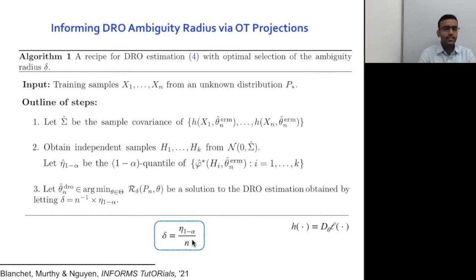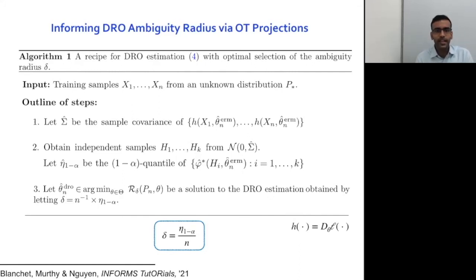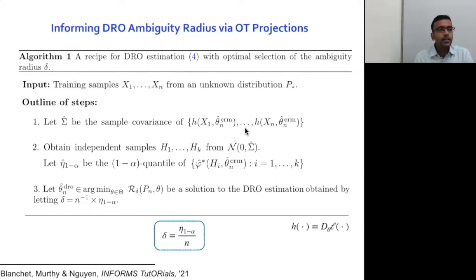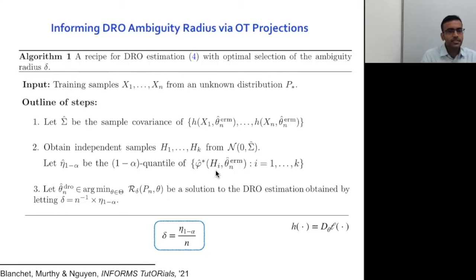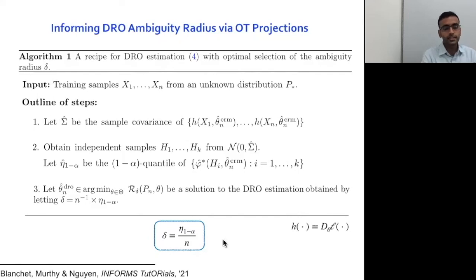The steps for selecting delta: estimate the covariance of the estimating criterion h using a consistent estimator plugged in from data (Step 1). Where there is no closed-form expression for the quantile, use simulation to estimate the quantile (Step 2). Then set delta equal to the estimated quantile divided by n. This delta has desirable statistical properties.